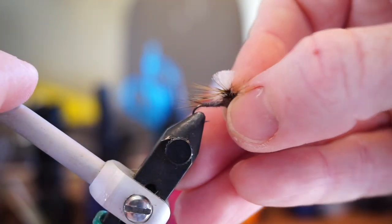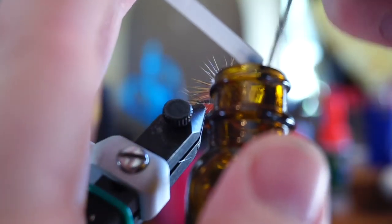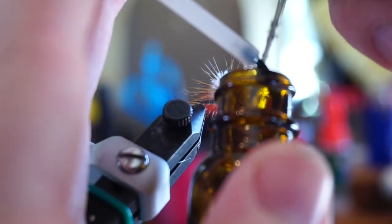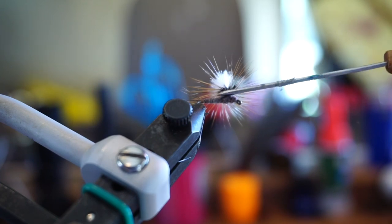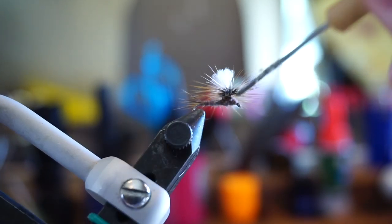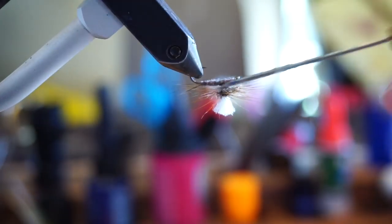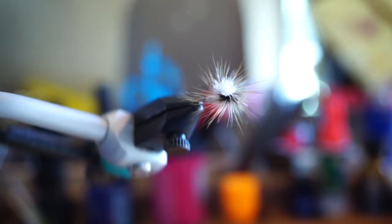Bring your fly back to the normal position, and then take a needle or bodkin and dip it in some cement. Then use the needle to wipe it onto your whip finish like so, on both sides and the front. And there we have it, the way I tie a parachute post.